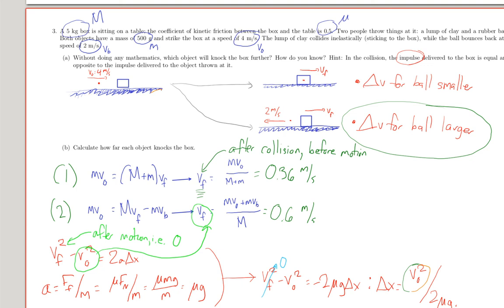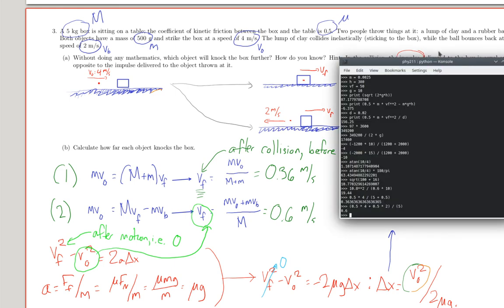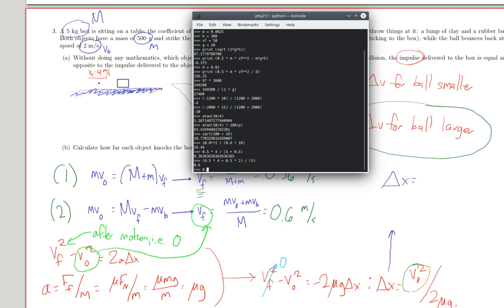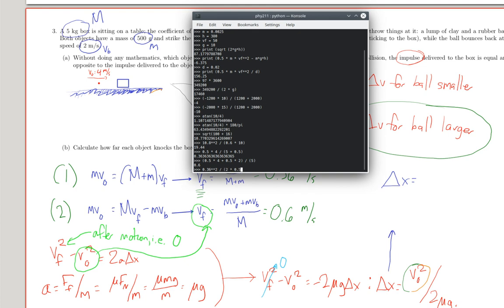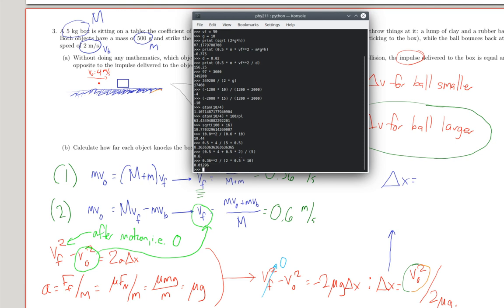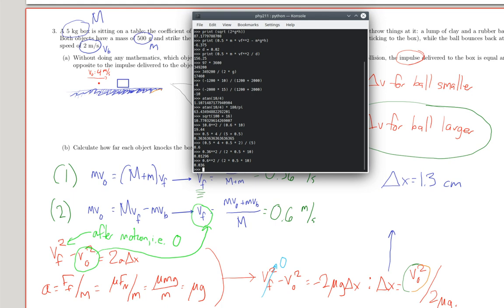So, then, if we're trying to figure out how far they knock the box. So, I can just plug these into this formula. So, delta x here, going back to our handy little python interpreter. 0.36 meters per second squared. Oops, that squared in python. Divided by 2, what's the coefficient of friction? 0.5. 2 times the coefficient of friction, times g, which we'll use 10. This gives me 0.13, excuse me, 0.013 meters, so 1.3 centimeters. And the second case is the same math, but now we use 0.6 as the initial velocity. Now we get 3.6 centimeters.